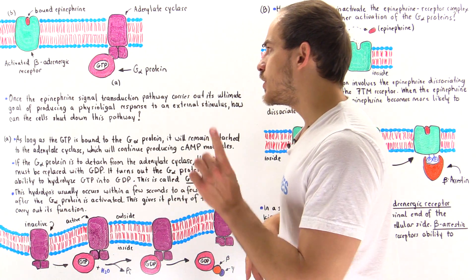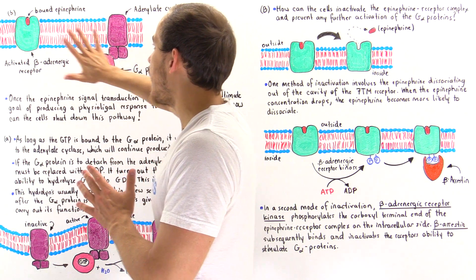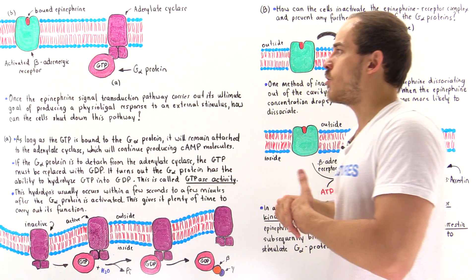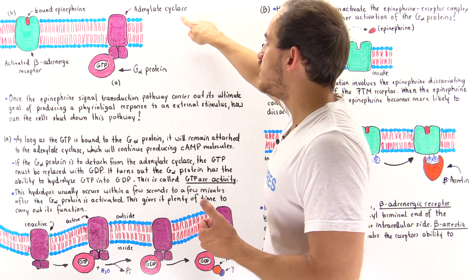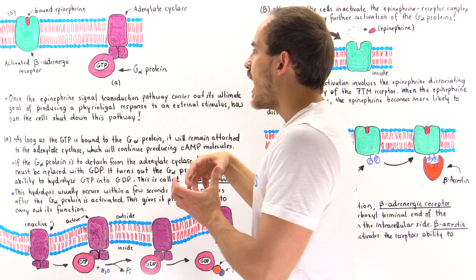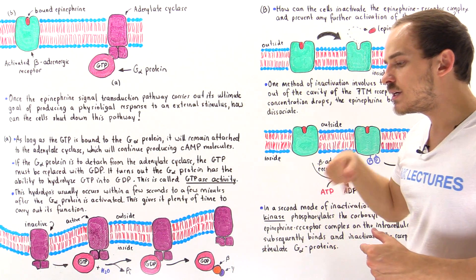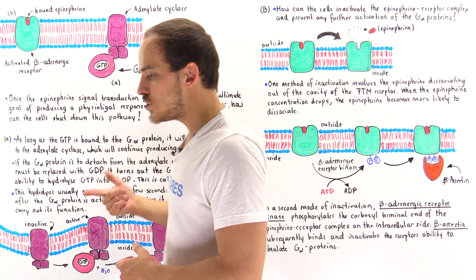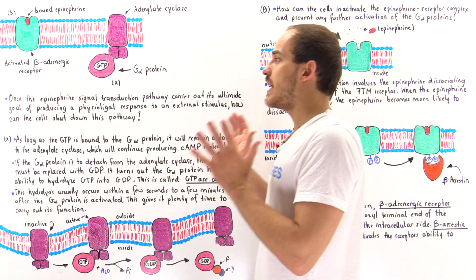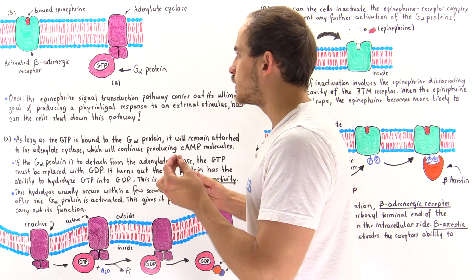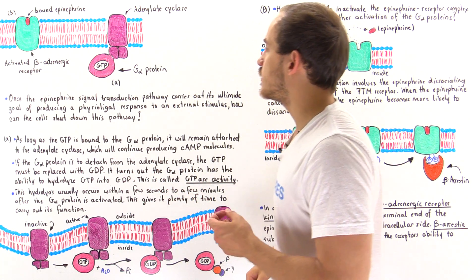There are basically two points in the epinephrine pathway that the cell can use to shut it down — Point A and Point B. In Point A, we have the alpha-G protein adenylate cyclase complex. When this complex exists, the adenylate cyclase continues transforming ATP molecules into cyclic AMP molecules, which are the secondary messengers in this epinephrine pathway. So what causes the alpha-G protein to bind and stimulate that adenylate cyclase?